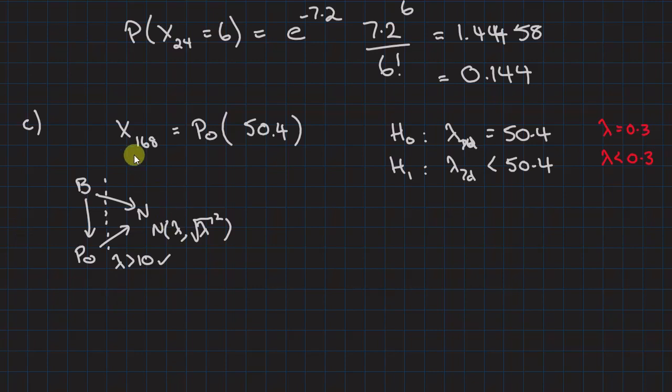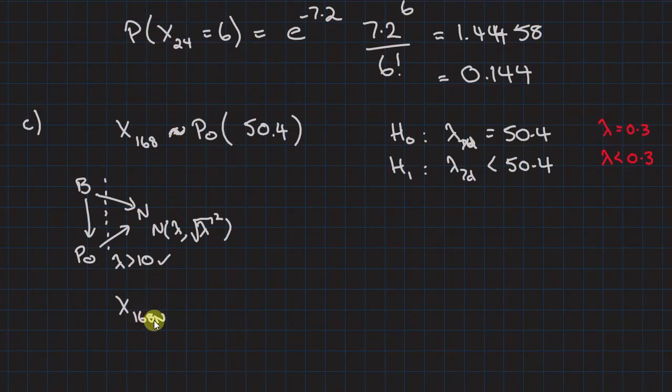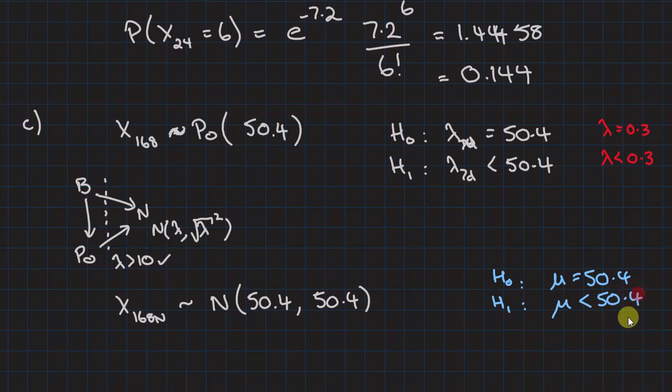So now we're going to do our approximation. So X168 normal is a normal distribution with 50.4 as our two parameters. And that leads to the alternative that they offer here, which is similar to our lambda. And they did it in terms of H0: μ=50.4, or H1: μ<50.4. That's the alternate hypothesis.